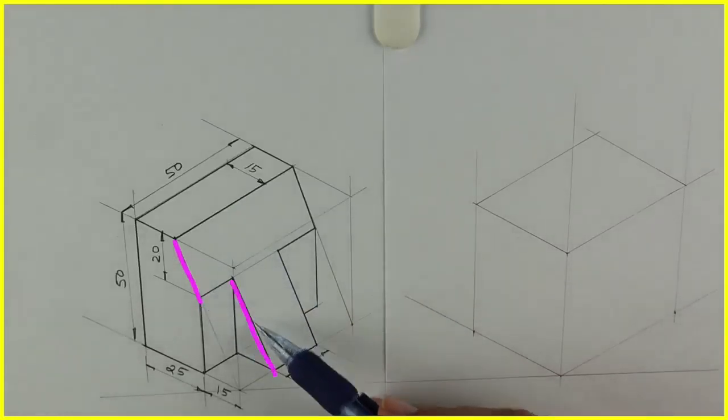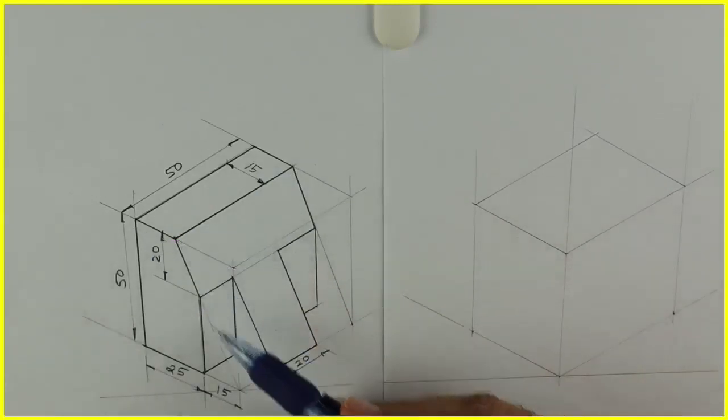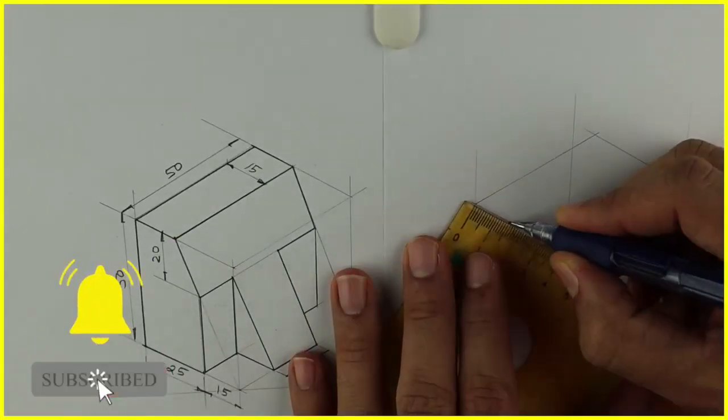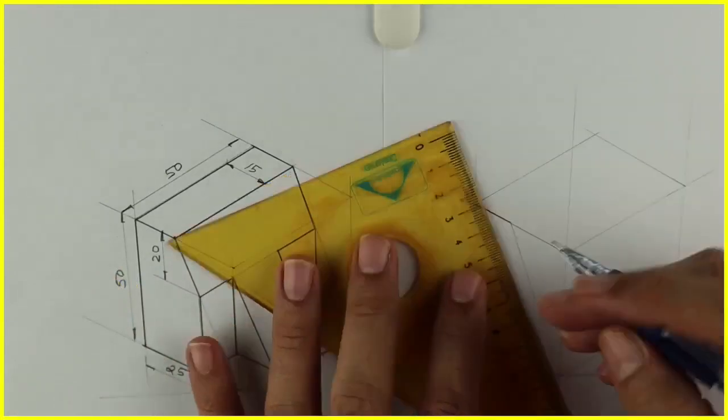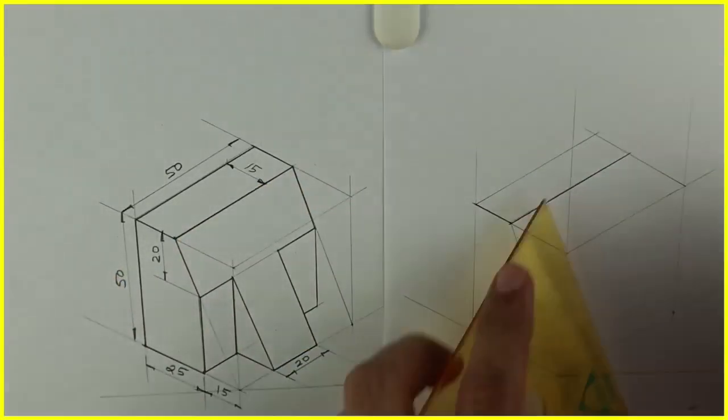It is divided into two parts. First we will draw 15, and we will draw this slope. We draw it light. Whatever is there in the front, the same thing is behind. First you need to draw full.